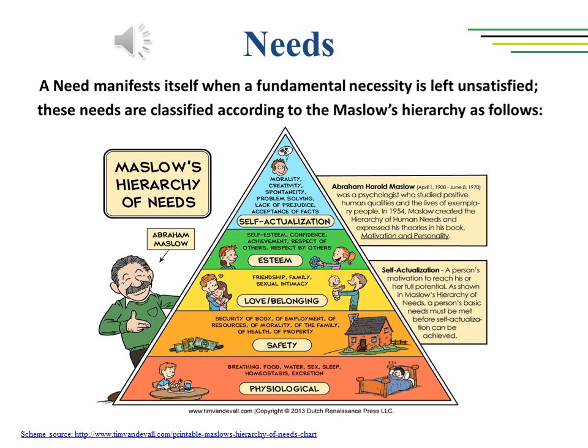At the lowest layer we have the physiological needs — physical requirements for human survival, such as breathing, eating, drinking, sleeping, sex and so on. Then we have the safety needs layer, such as personal security, health, financial security, etc. The third layer represents love and belonging needs, such as friendships, family or sexual relationships. The fourth layer represents the field of self-esteem, such as confidence, achievement, respect of others, etc.